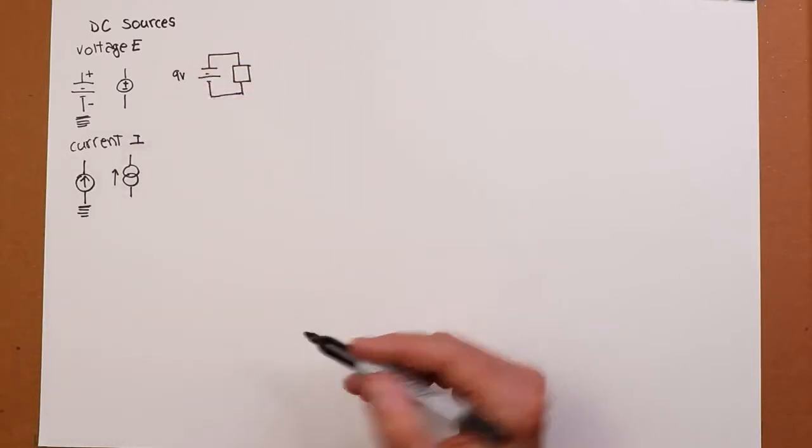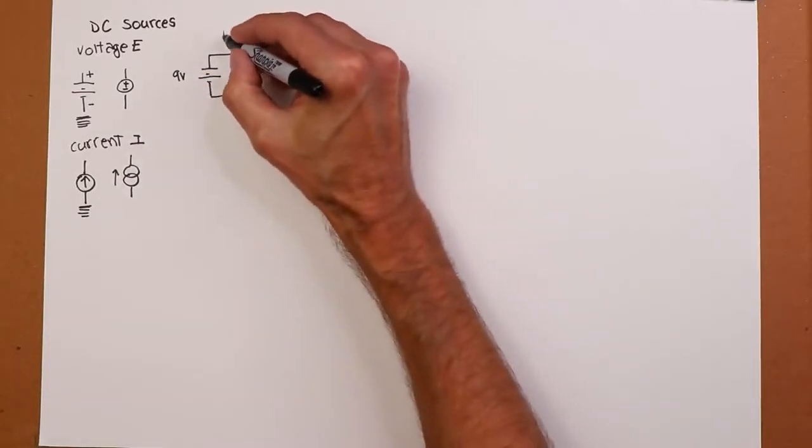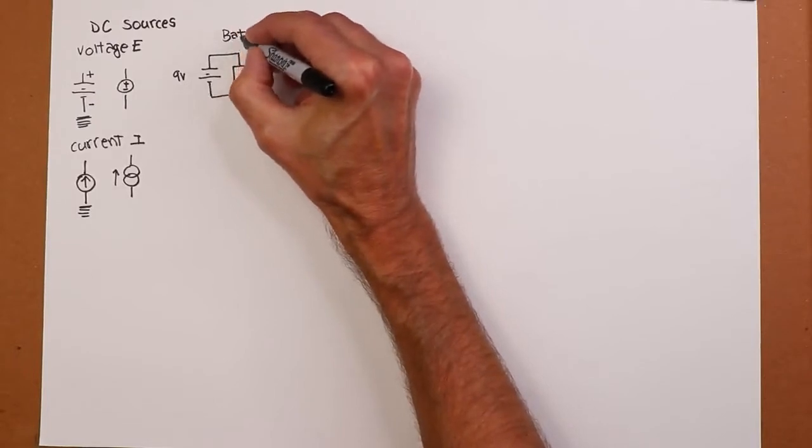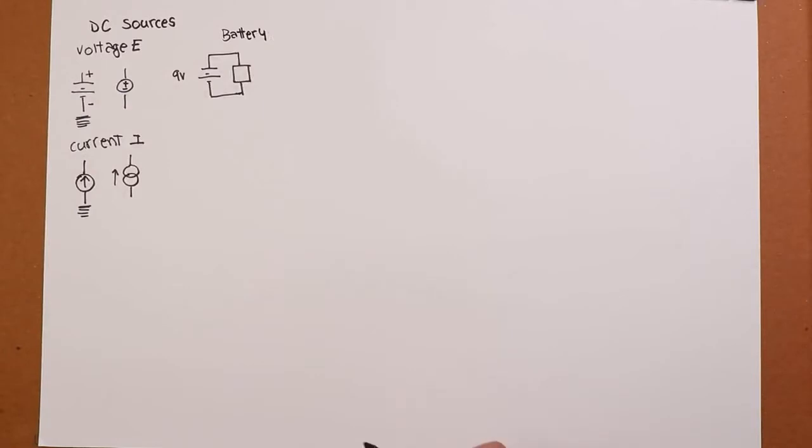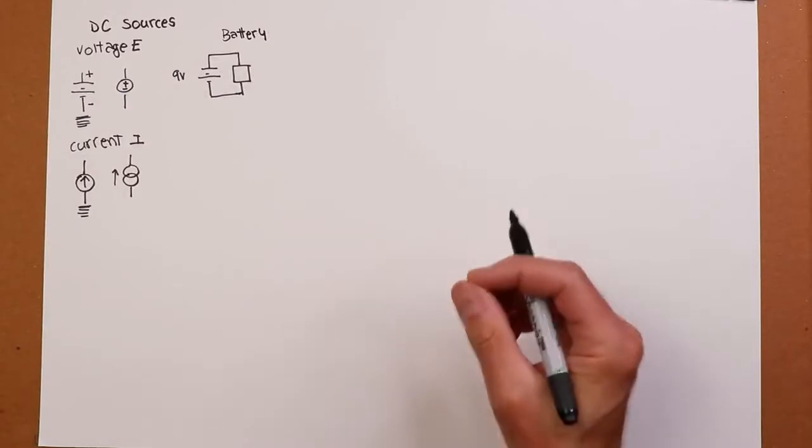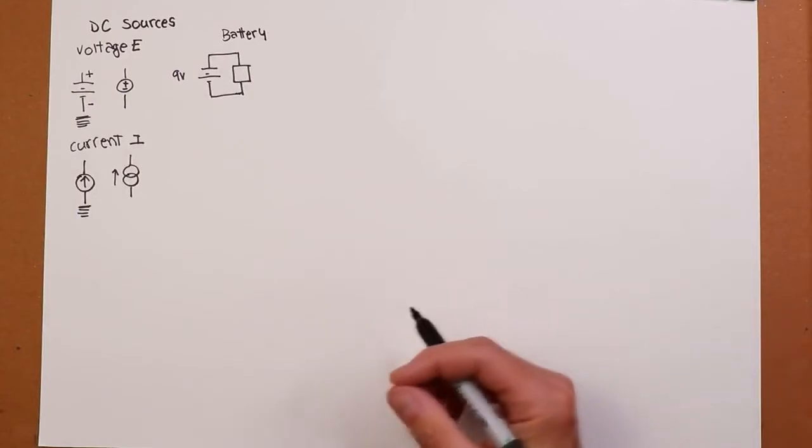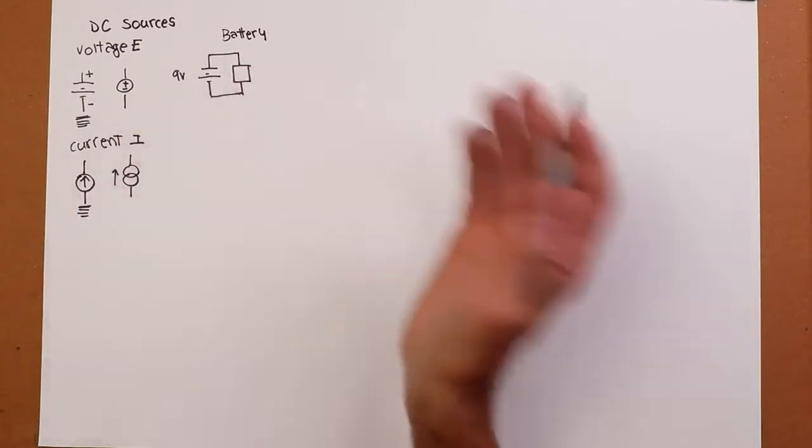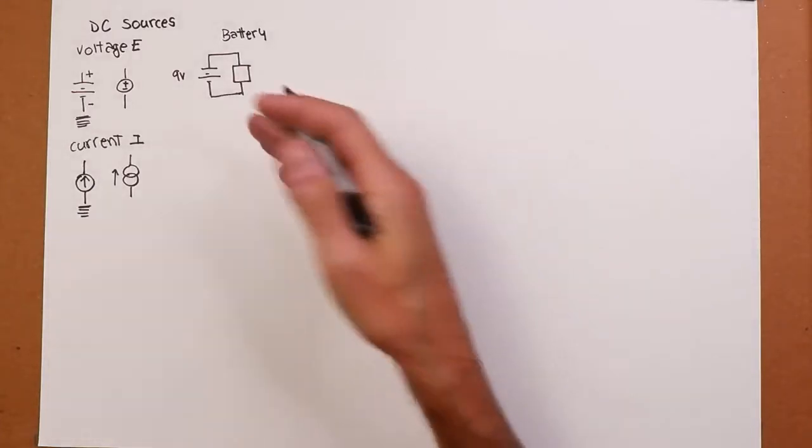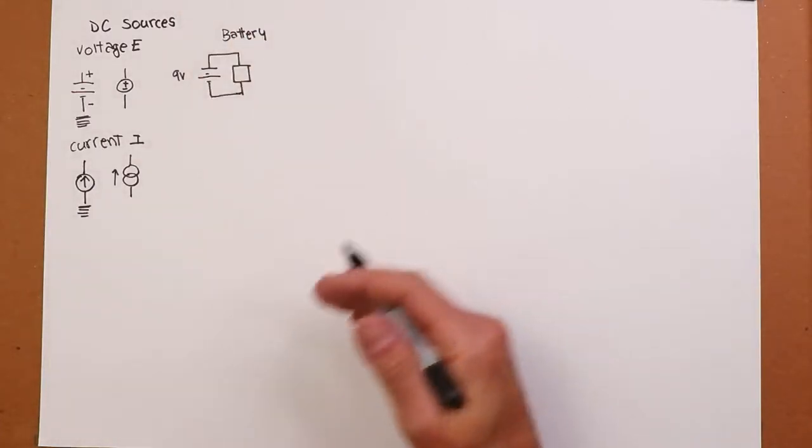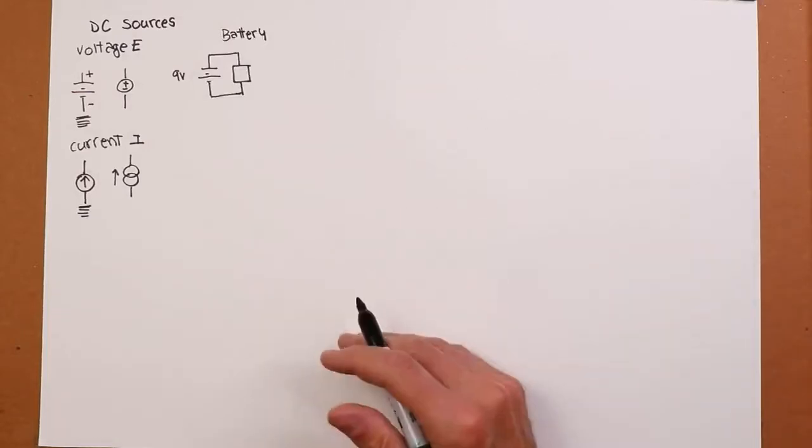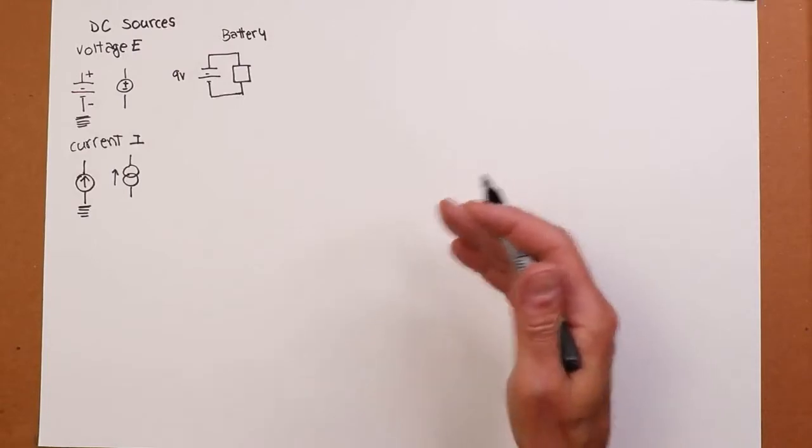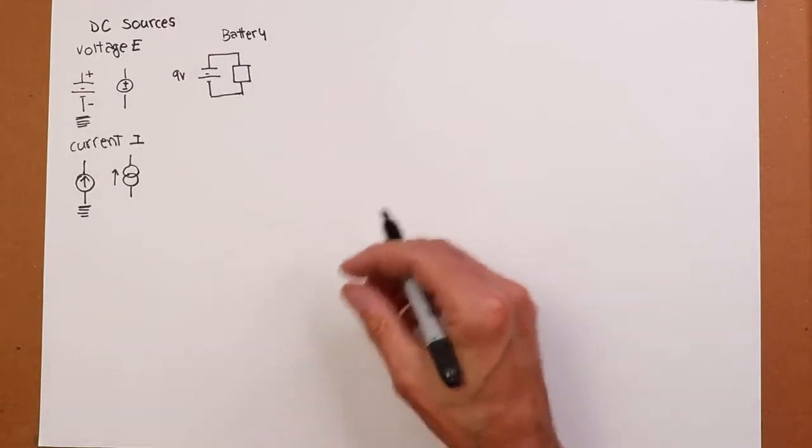Now, a voltage source everybody's familiar with in terms of batteries. That's an ideal constant voltage source. These are also referred to as independent sources. We say they're independent because nothing really affects them. They're independent of any other voltage or current in the circuit. As you will see, there are also things called dependent sources, but we won't see those for a little while yet. Those are often used to model active devices like transistors.